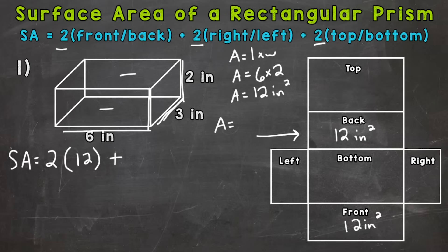So we could plug in 3 times 2. And that gives us an area of, let's actually write it out, length times width. Area equals 3 times 2. So that area is going to be 6 square inches. So again, that's the right and left. So we would do 2 times 6 for the right and left.